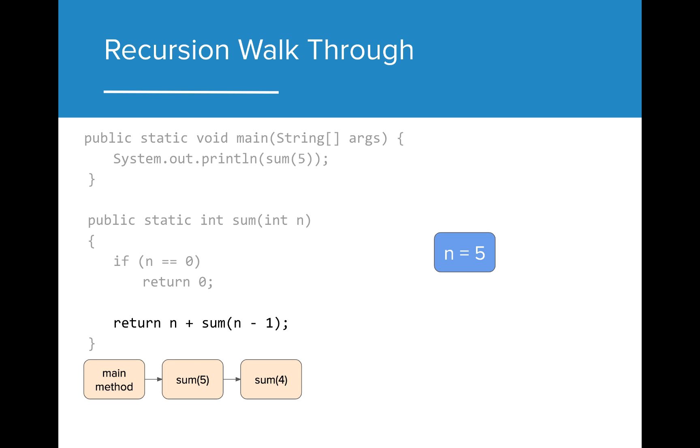Before we can return that statement, we have to resolve sum of 4, so we call that function. Now we are in the function for n equals 4. Once again, n does not equal 0, so we skip the first return statement. Each time we call the sum function, we generate a new iteration of the sum method with its own set of local variables and formal parameters.